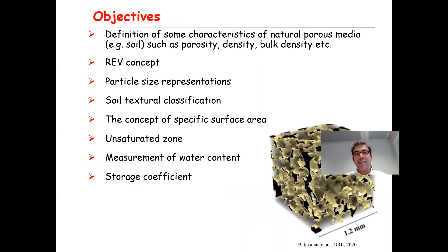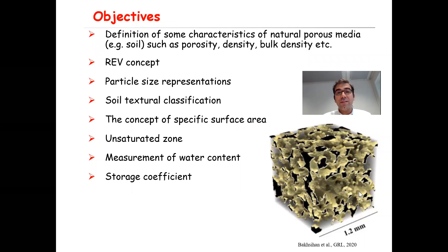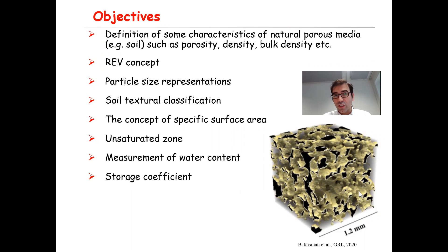The objectives of this chapter are to define characteristics of natural porous media — for example, soil — such as porosity, density, bulk density, and so on. We'll also talk about the representative elementary volume concept or REV concept, particle size distribution, soil texture classification, the concept of specific surface area, and the unsaturated zone, measurement of water content.